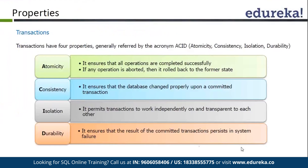Then there is consistency. It simply means either the transaction is processed completely or it is not processed at all, so the database remains consistent. If we are going to update the data of three tables in a transaction, and I have updated data for the first table, but while updating for the second table I got some error, then even the data for the first table will be rolled back. Simply means the data will remain consistent — there is no chance that data will be inconsistent.